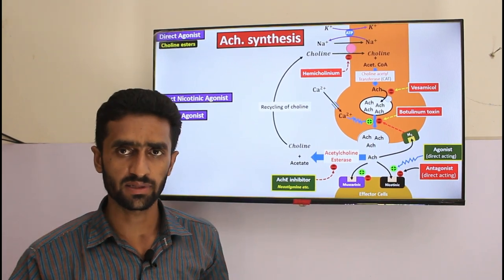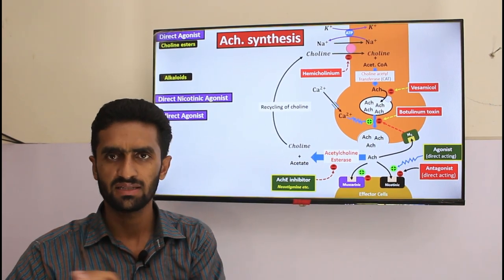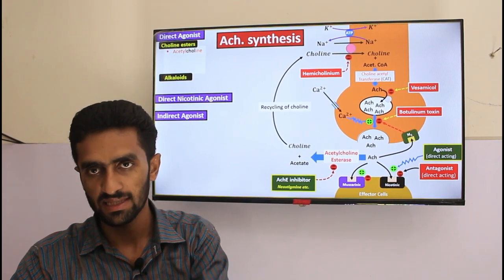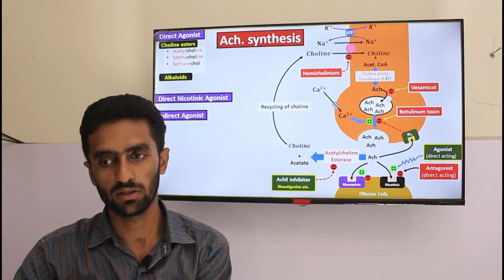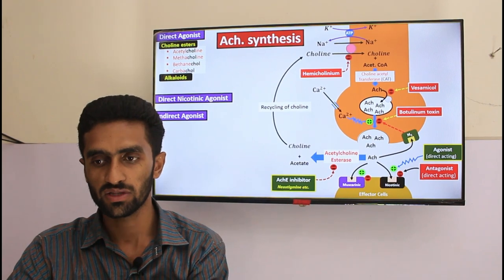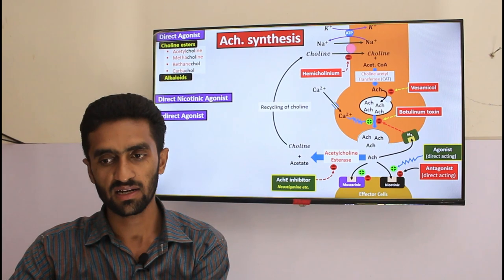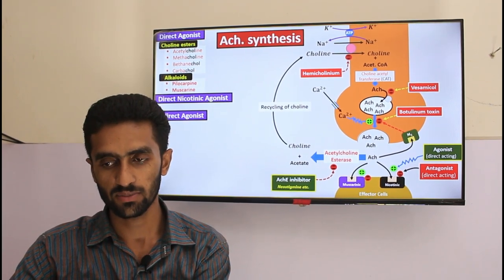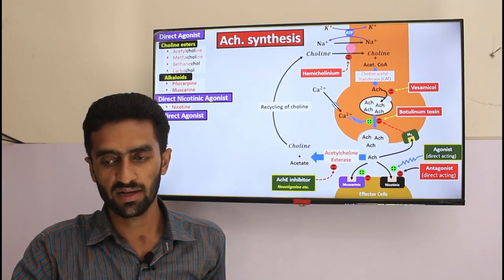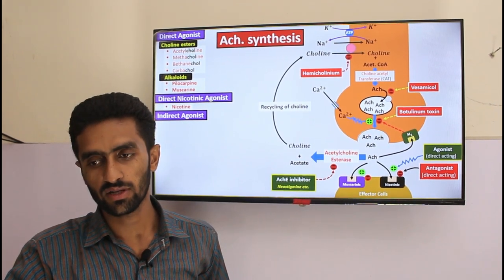Direct agonists are of two types: cholinesters or alkaloids. Cholinesters are modifications of acetylcholine structure — methacholine, bethanechol, and carbachol are just modifications. Alkaloids include natural pilocarpine and muscarine. They directly stimulate muscarinic and nicotinic receptors, while nicotine specifically stimulates nicotinic receptors but is not clinically used.